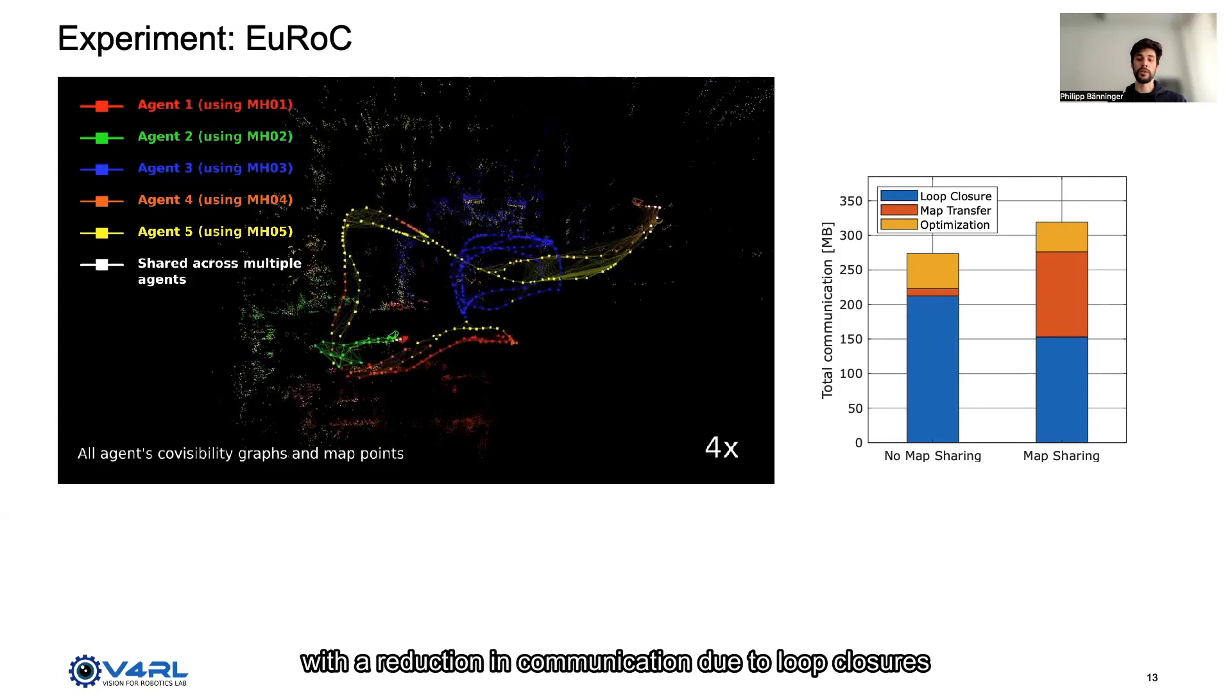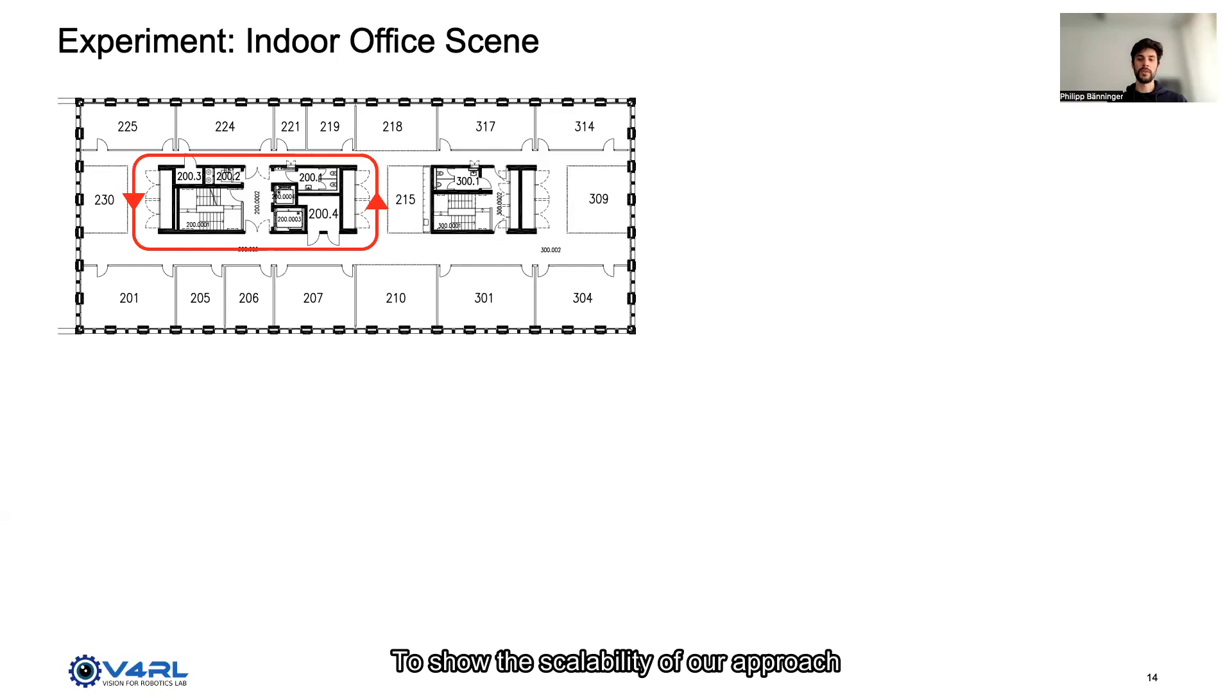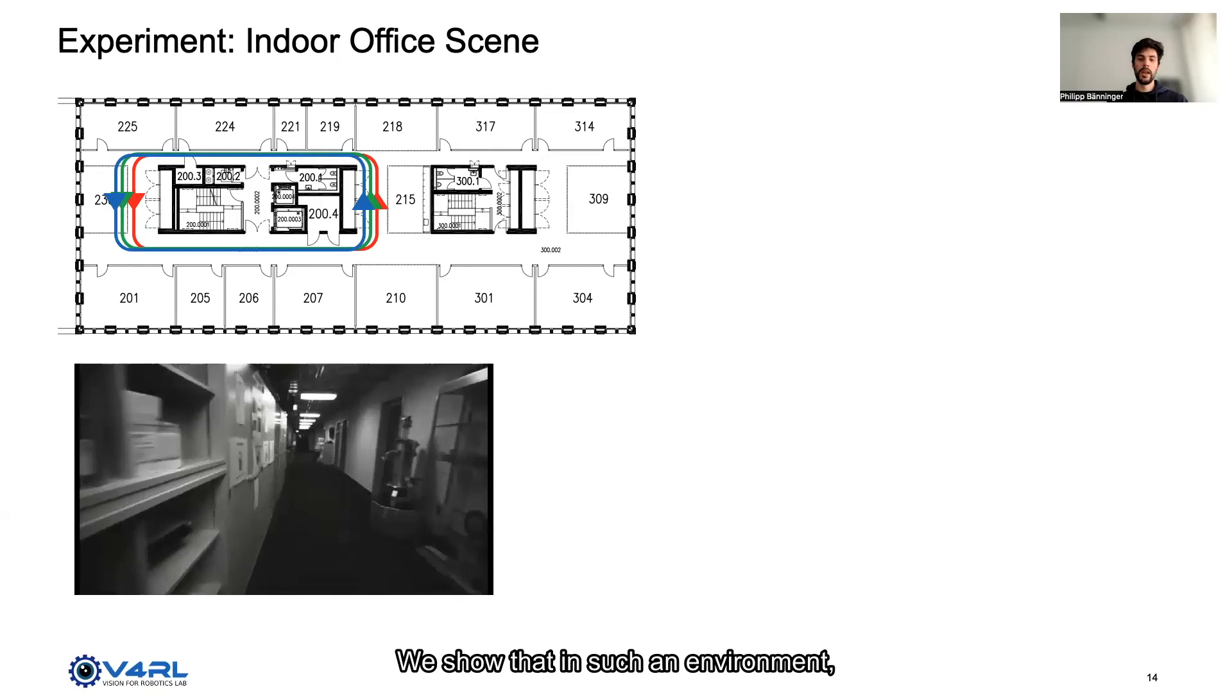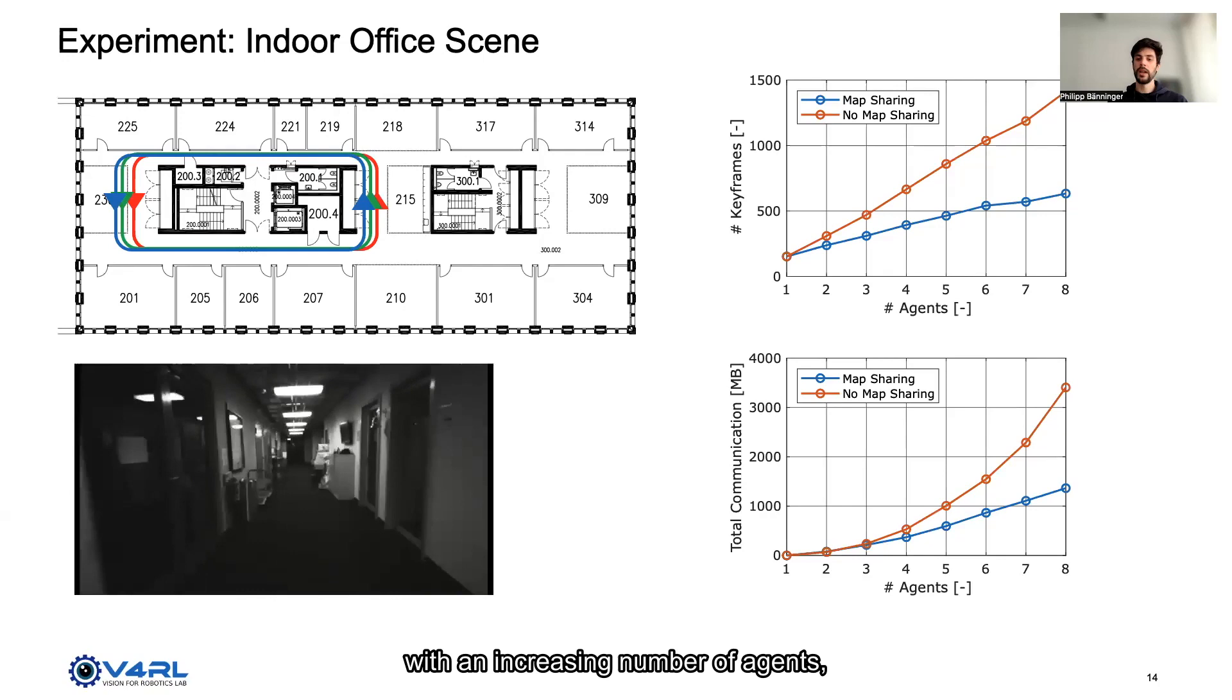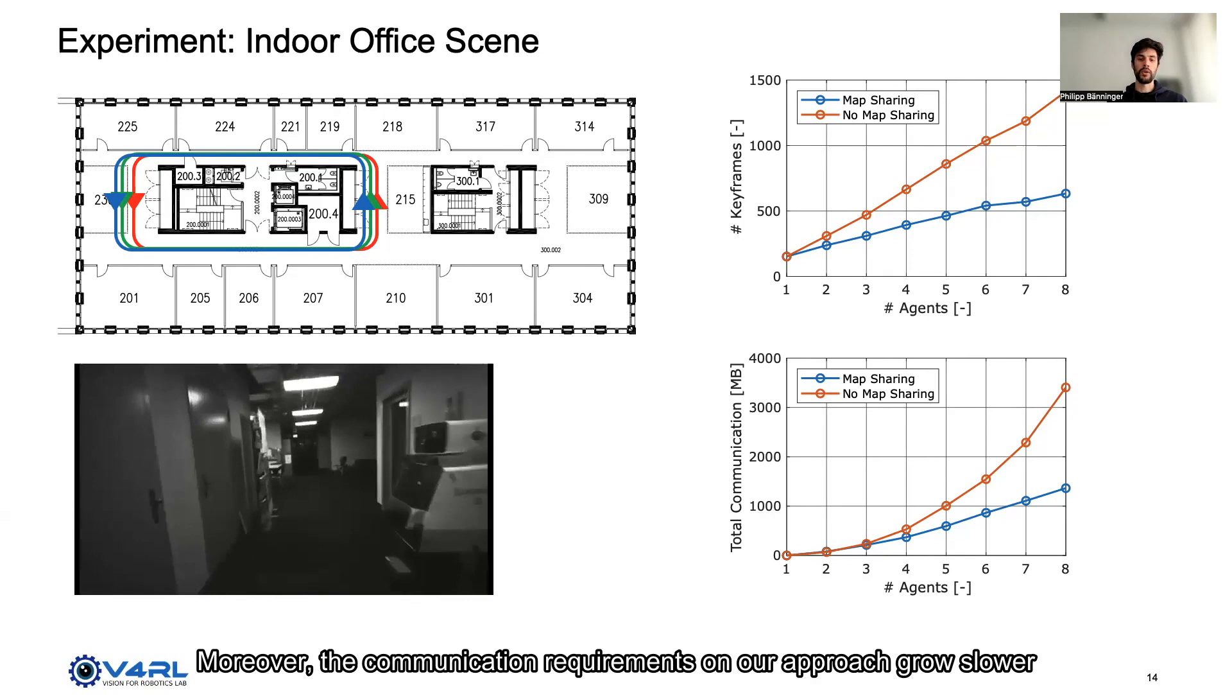To show the scalability of our approach, we run an increasing number of agents in a constrained indoor office environment. We show that in such an environment, the map sharing strategy converges to a constant number of keyframes with an increasing number of agents, whereas the no map sharing strategy scales linearly. Moreover, the communication requirements on our approach grow slower since fewer loop closures need to be established.